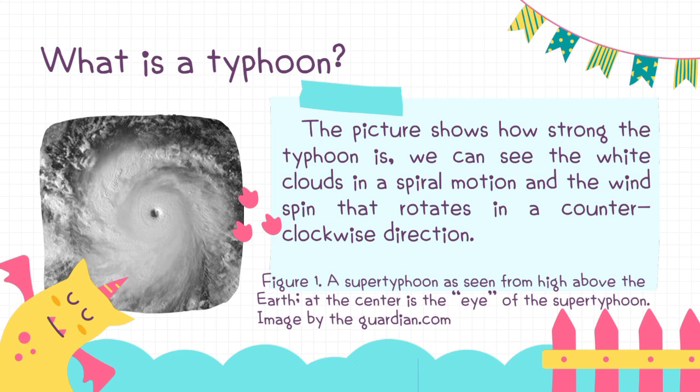The picture shows how strong the typhoon is. We can see the white clouds in a spiral motion and the wind spin that rotates in a counterclockwise direction. A super typhoon as seen from high above the earth — at the center is the eye of the super typhoon.